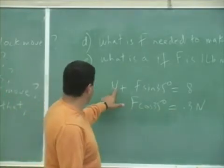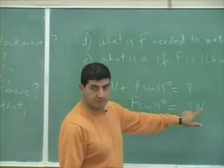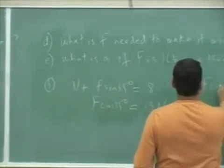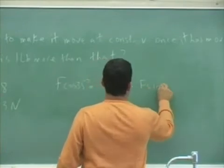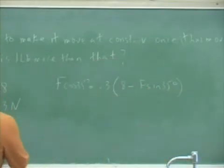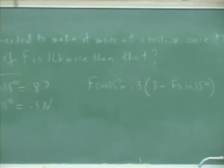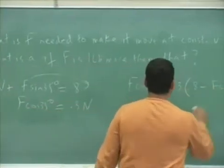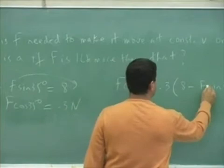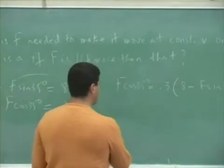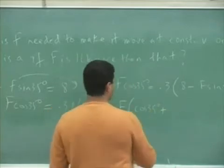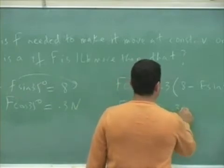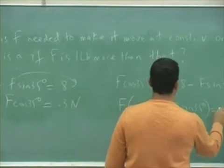So now to solve this, you can substitute this N into this N. You get F cos 35 equals 0.3 times eight minus F sine 35. So I take this over to the other side, substitute it into the bottom N, and then I factor this in, factor this in, take it to the other side. There's a little bit of algebra you have to do here, right? You end up with F cos 35 plus 0.3 sine of 35 equals 2.4.